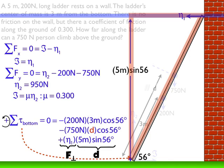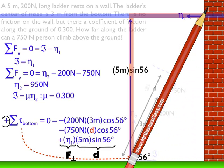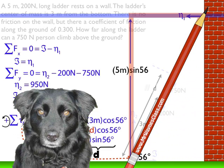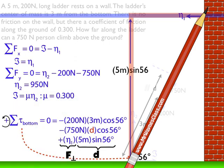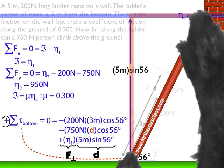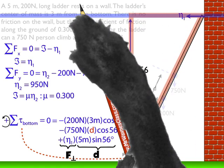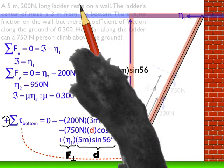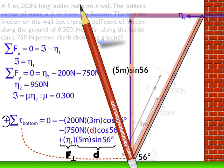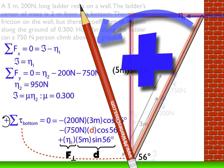This torque is positive. Using the pencil test: put the hand at the fulcrum, reach up to the top where the force is applied, and move in the direction of the force. That force causes a counterclockwise rotation, and counterclockwise rotation is positive — that's where the positive sign came from.